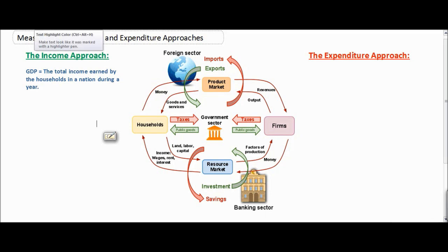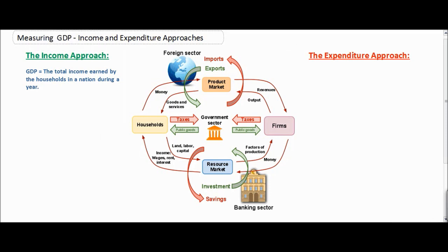Any circular flow model includes two markets. It includes households and firms. Households are the providers of resources to firms who demand resources in order to produce goods and services. As we see in our circular flow here, households provide land, labor, and capital to firms in the resource market.